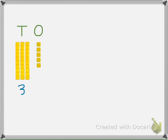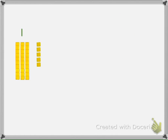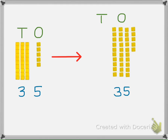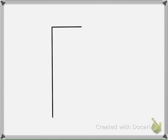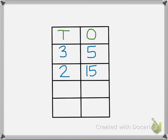Break up one more 10 into 10 ones. Now 35 is built using one 10 and 25 ones. It can be easier to see the pattern of 10 using a chart to show the different ways to make 35.